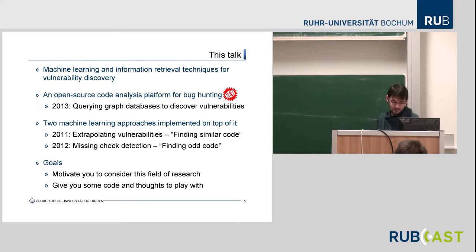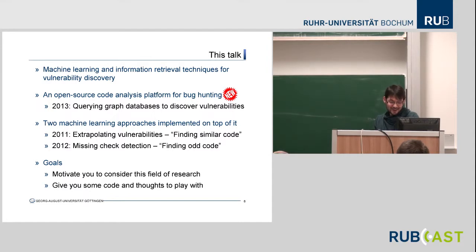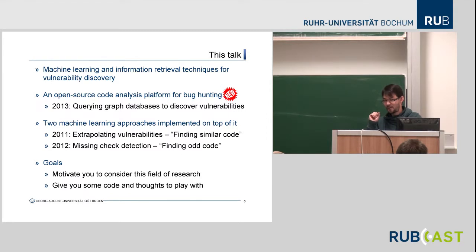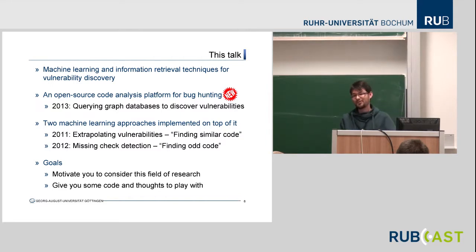Now about this talk specifically: you're going to see something very new which I haven't talked about yet. It's an open source code analysis platform for bug hunting, and you can download it — there will be a link at the end of the presentation. Then there are two machine learning approaches built on top of this open source framework. One is about extrapolation of vulnerabilities — finding vulnerabilities similar to one you already know — and the second is about detecting missing checks in code, or finding odd code automatically.